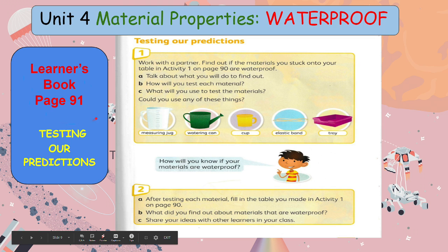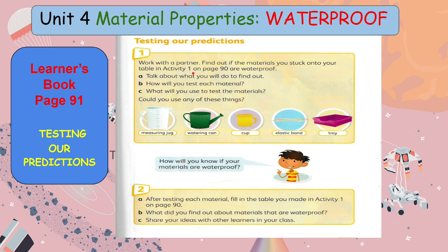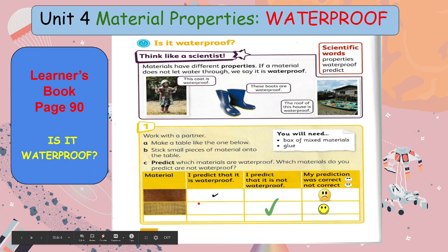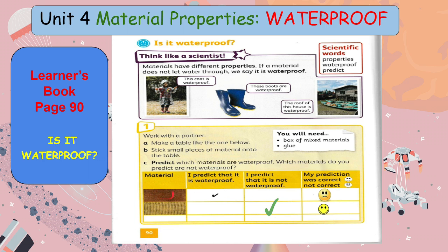In your learner's book page 91, we are testing our predictions. We will find out if the materials from Activity 1 on page 90 are waterproof. How will you test each material, and what will you use? You could use a measuring jug, watering can, cup, elastic band, or a tray. My prediction is that wood is waterproof and fabric will be waterproof. My experiment showed me that wood is waterproof because the water just kept bouncing off.